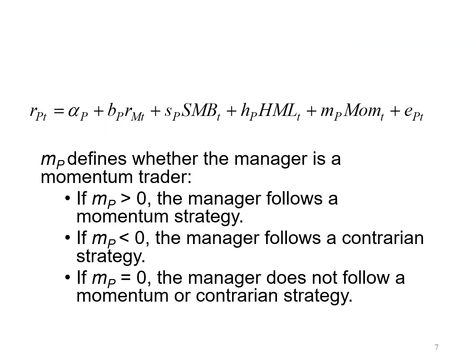From the coefficient of the momentum, MP, we will be able to know whether the manager is a momentum trader. If MP is larger than 0, or positive, the manager follows a momentum strategy. If MP is negative, the manager follows a contrarian strategy. If MP is equal to 0, the manager does not follow a momentum or contrarian strategy.